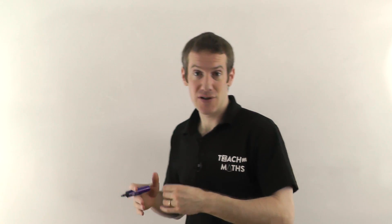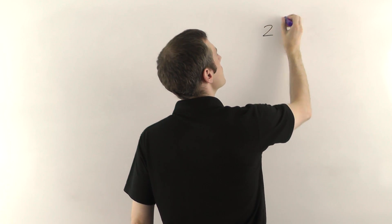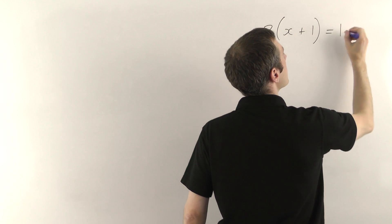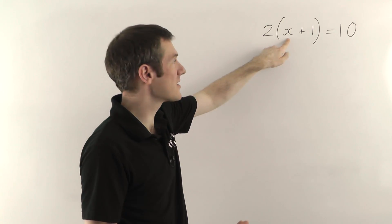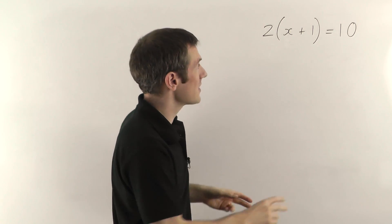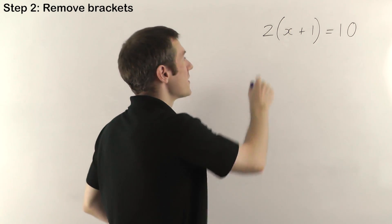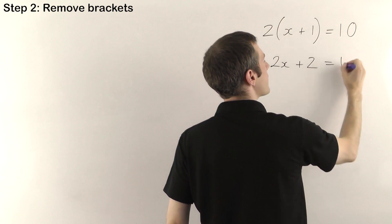Let me remind you with a normal equation first, then show you how it works with transposition. Transposition is basically solving equations where most or all of the letters have been replaced by numbers, so it's easier to see with numbers first. So if we have 2 outside the brackets, x plus 1 inside, equal to 10: step 1 is remove fractions — no fractions, skip it. Step 2 is remove brackets, so we take the 2 and multiply the inside terms one at a time: 2 times x gives 2x, and 2 times plus 1 gives plus 2.